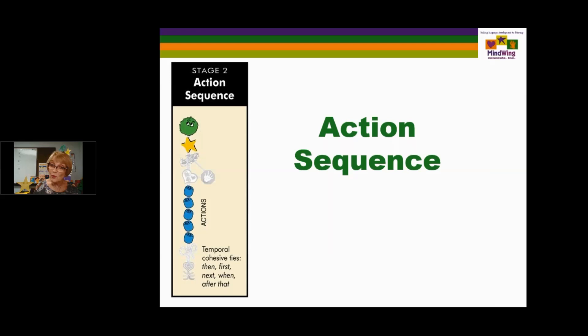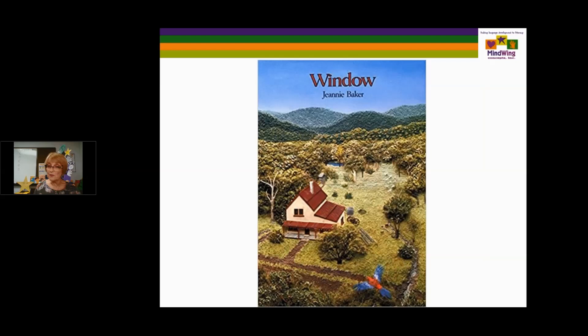There are many others within our manuals in the appendices. For the action sequence — stage two — the character and setting are present, but more complex now are the actions going on in some kind of a sequence. These are important when you're analyzing a book for its complexity, which a Lexile alone can't do, or when analyzing a child's retelling or writing. The first book I like is Window — actions within a changing setting looked at through a window. Visual details in the description are a focus. The message is that environment changes through the actions of people.